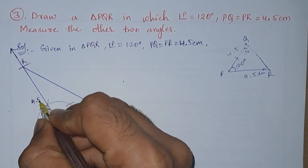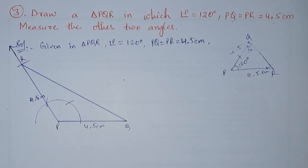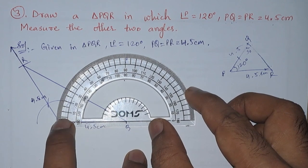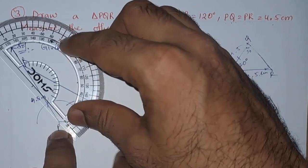So P to R is 4.5 centimeters. And they also said to measure the other two angles. Now we will measure the other two angles with the protractor. So here we got this as 30.